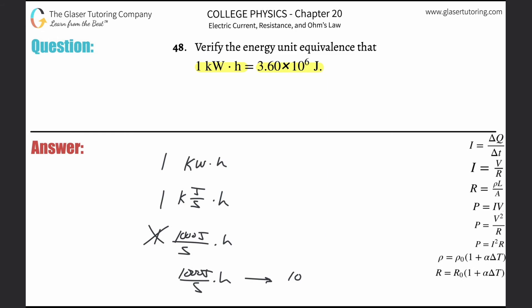...seconds. And notice the seconds cancel. What do you think that works out to be? 1000 times 3600 works out to be 3.6 times 10 to the 6 joules, and there's the equivalence.